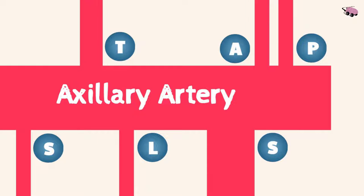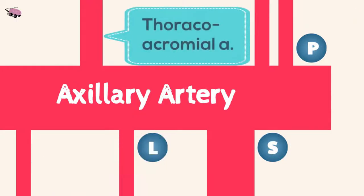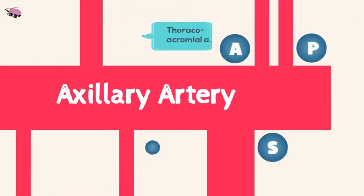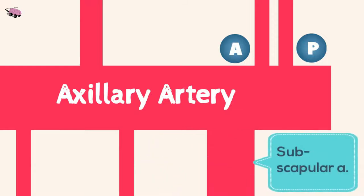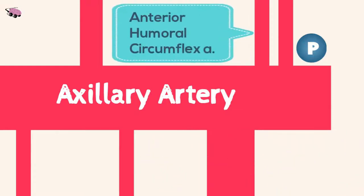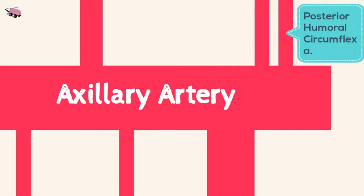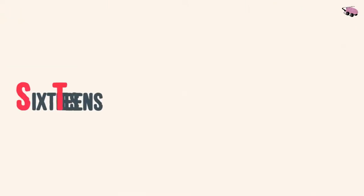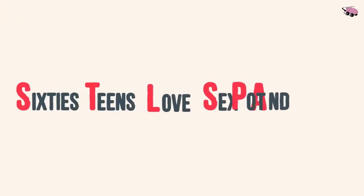So we'll label: supreme thoracic artery, thoracocomial trunk, lateral thoracic artery, subscapular trunk, anterior humeral circumflex artery, and posterior humeral circumflex artery. Sixties, teens, love, sex, and pot.